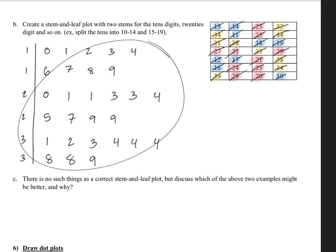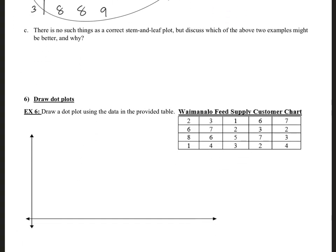The second example might be better because splitting into more classes lets you see the frequency distribution more clearly. Stem and leaf plots are best used with a small amount of data — as you can see, even with our small dataset it took a while to graph. With a large dataset, this is not a good method to use.